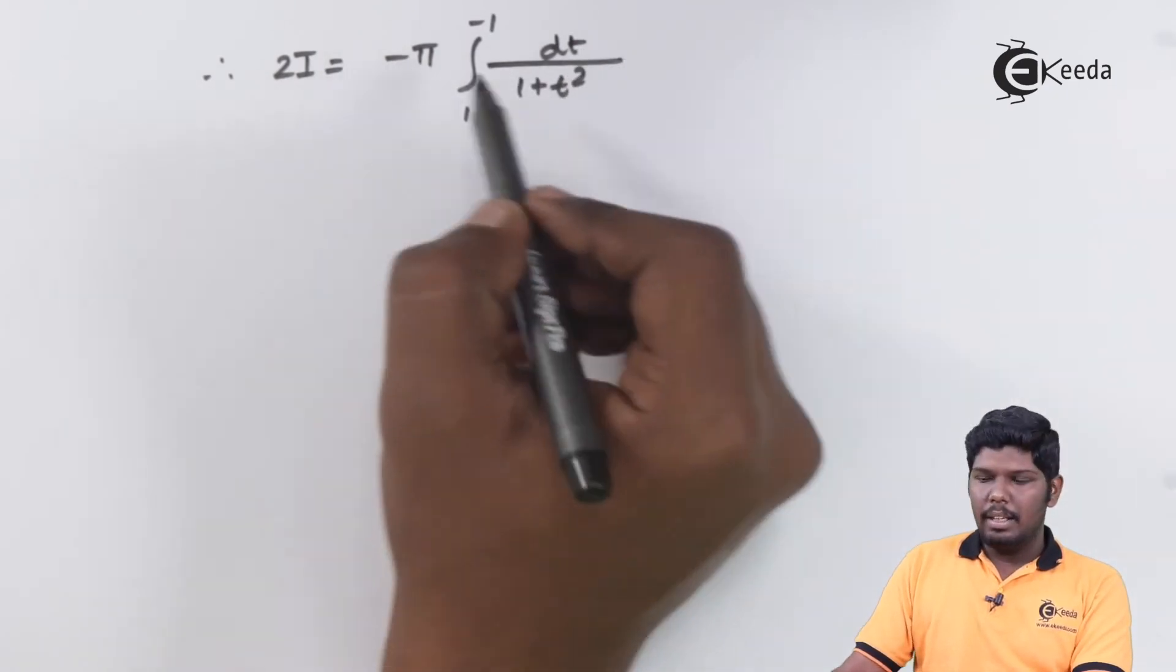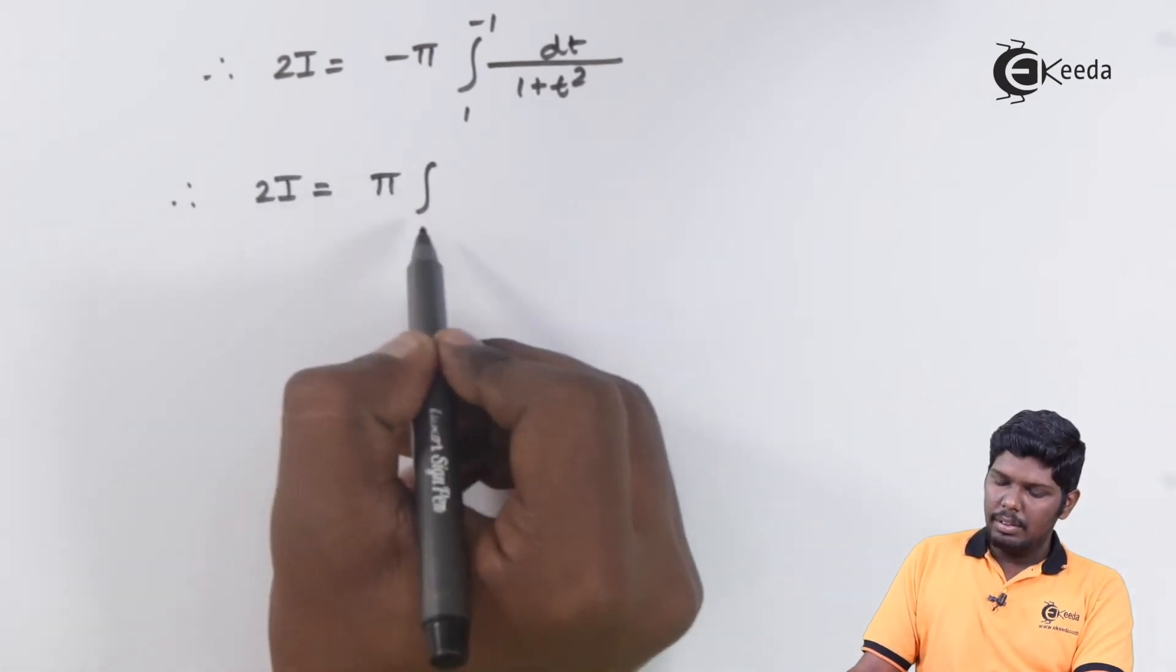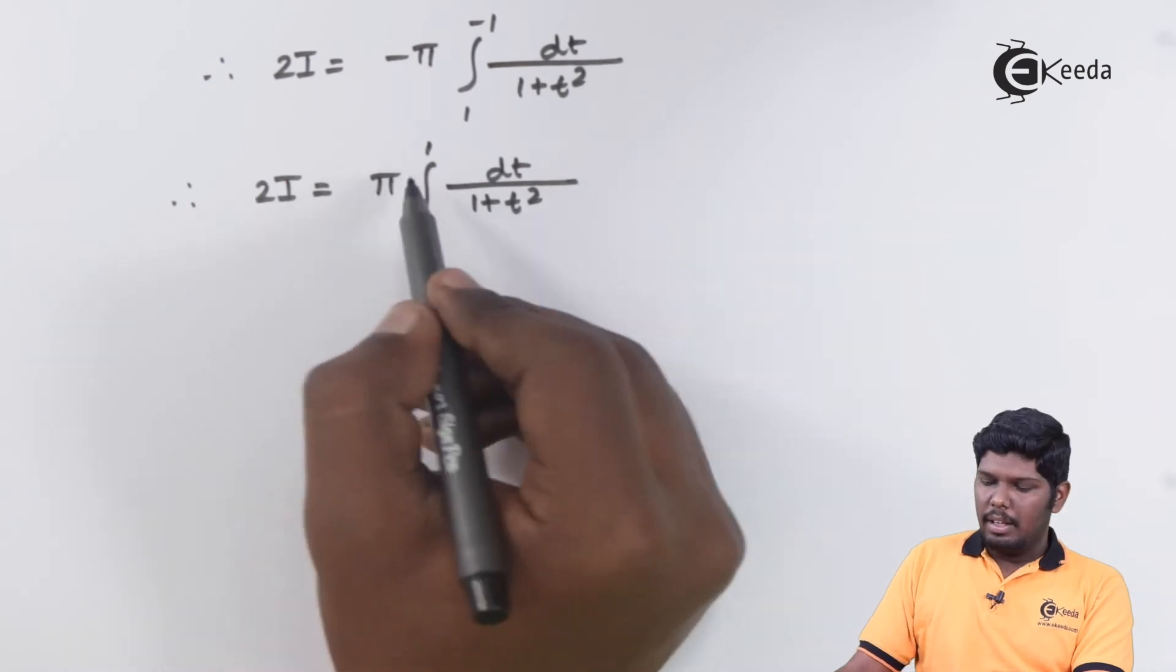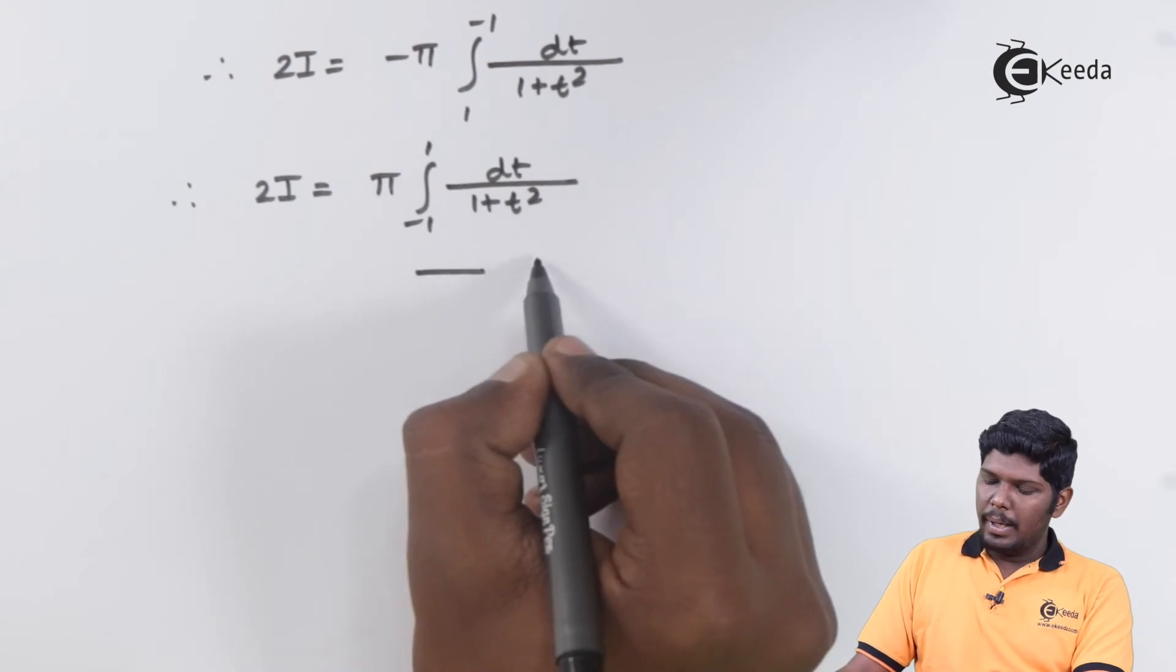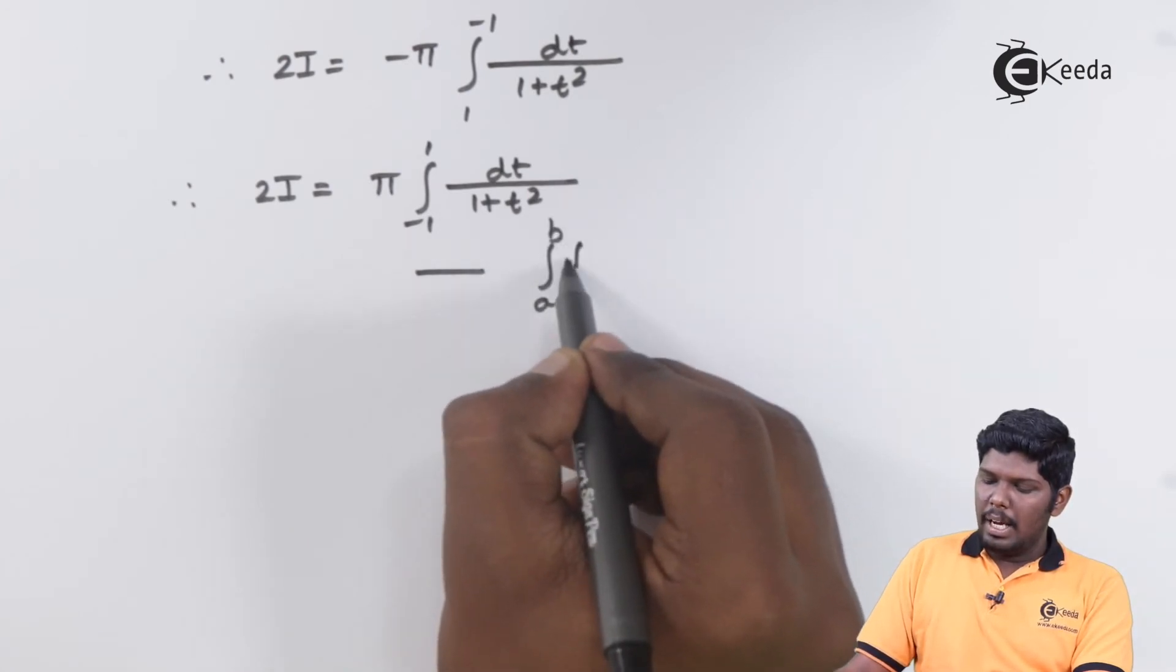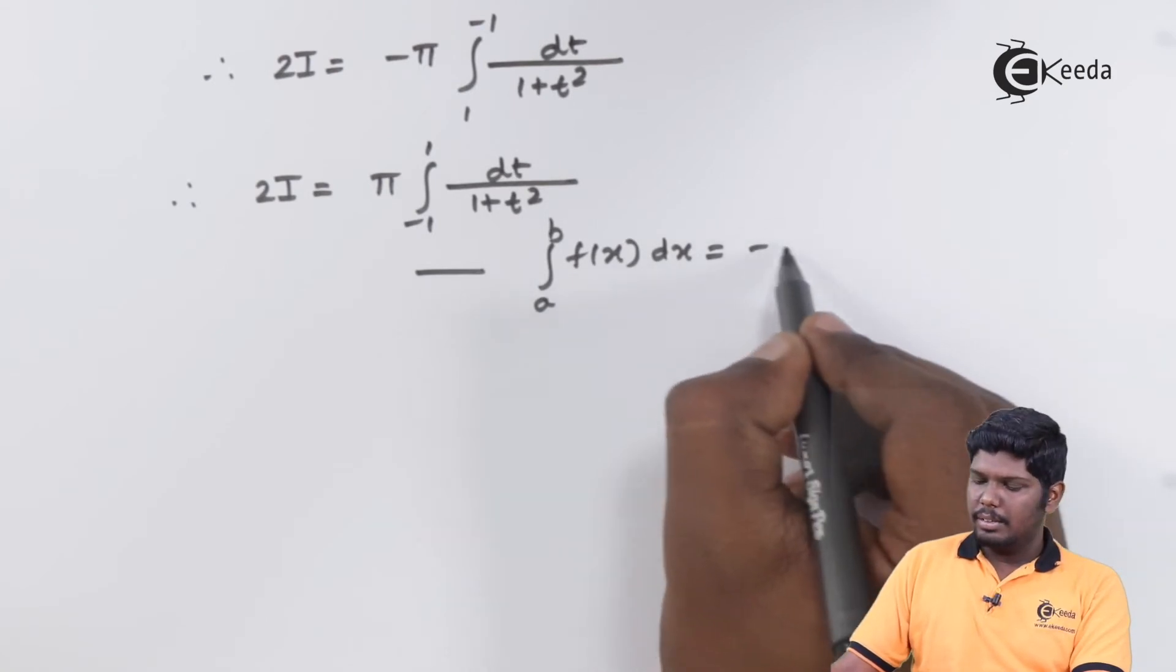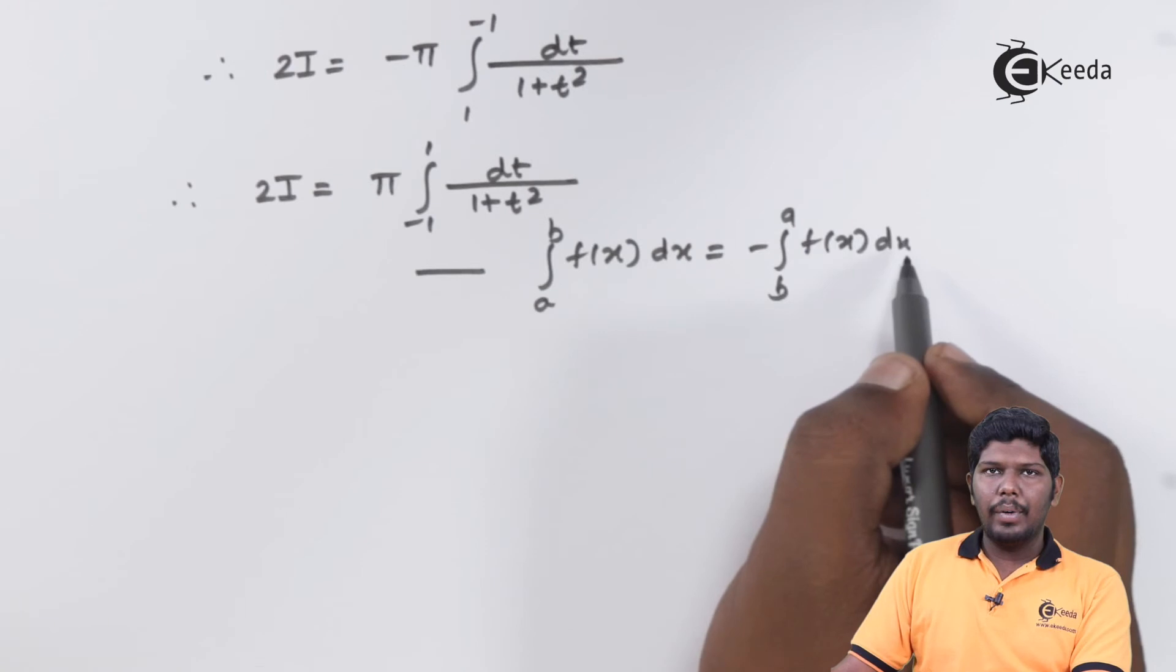We can eliminate this minus sign by interchanging the limits, which will give you pi integral minus 1 to 1, dt upon 1 plus t square. As the property goes, integral a to b f of x dx can be written as minus integral b to a f of x dx.